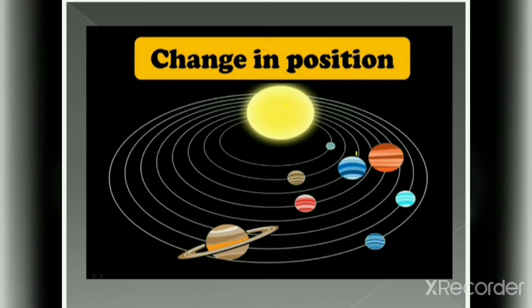All the planets of our solar system are continuously revolving around the sun. This is change in position. They are continuously changing their positions.